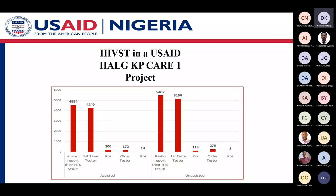This slide shows HIV self-testing in a USAID KP program. For unassisted, we had more self-test kits distributed compared to the assisted. For both unassisted and assisted, we had more first-time testers than repeat testers.